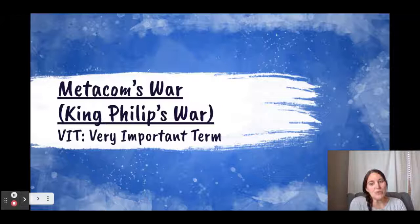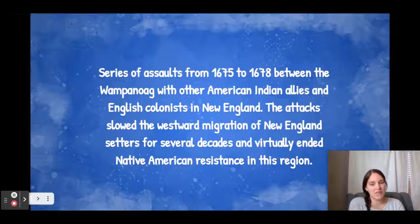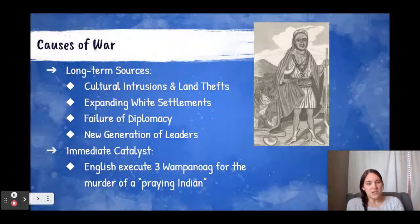Today we're going to be talking about Metacom's War, also known as King Philip's War. It's one of the very important terms from the APUSH curriculum, specifically Period 2. Here's your definition: a series of assaults from 1675 to 1678 between the Wampanoag with other American Indian allies and English colonists in New England. The attacks slowed the westward migration of New England settlers for several decades and virtually ended Native American resistance in the region.